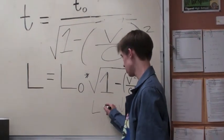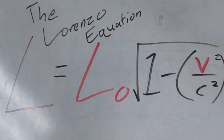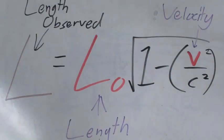This is the Lorentz equation for the relativity of length. It solves for an object's length and has variables of length and velocity.